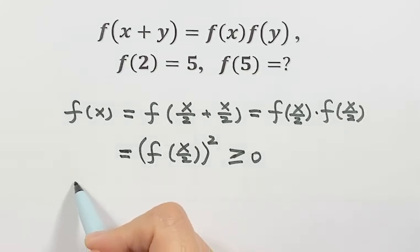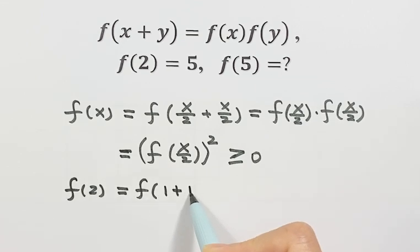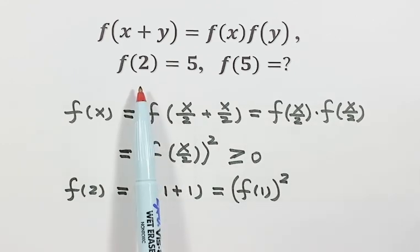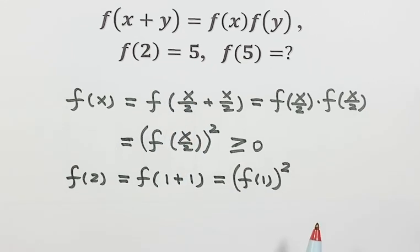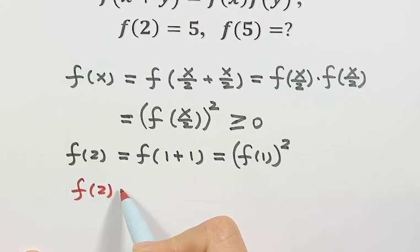So now let's see f(2). We can write it as 1 plus 1. Then x is 2. Then from here we have f(1) squared. But then look at the given condition, f(2) equals 5. So here given f(2) equals 5, let's combine them together.